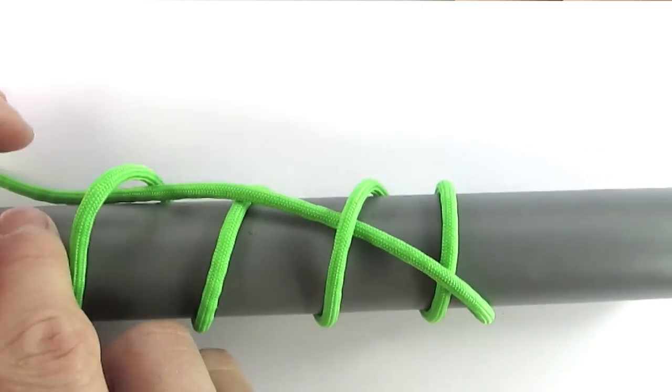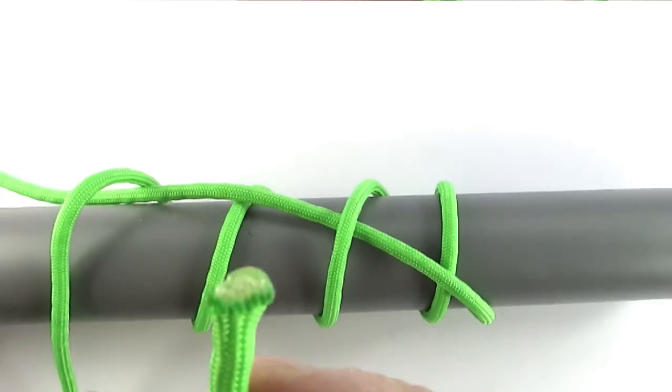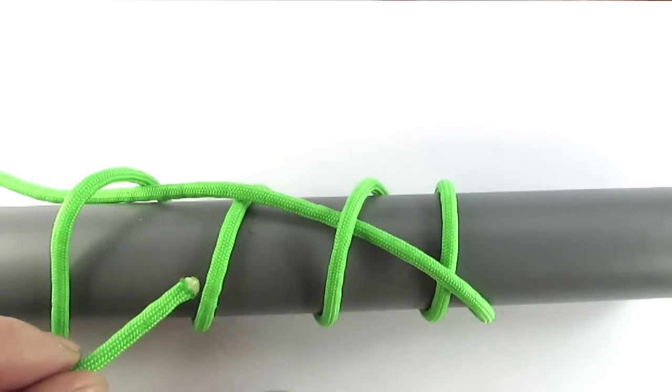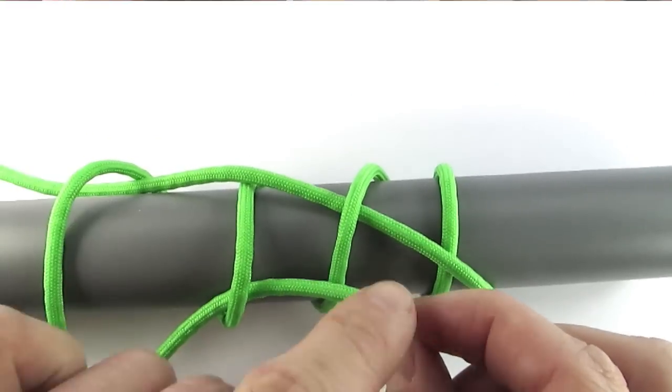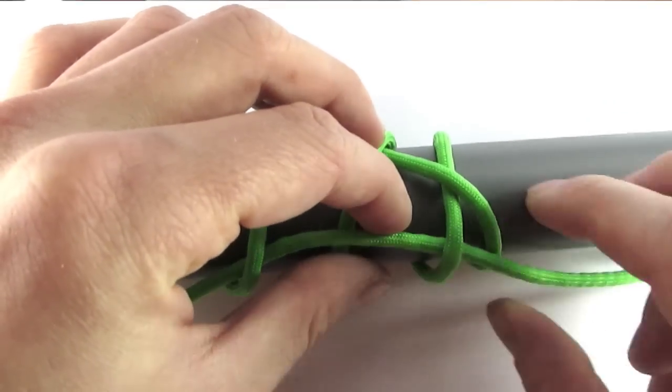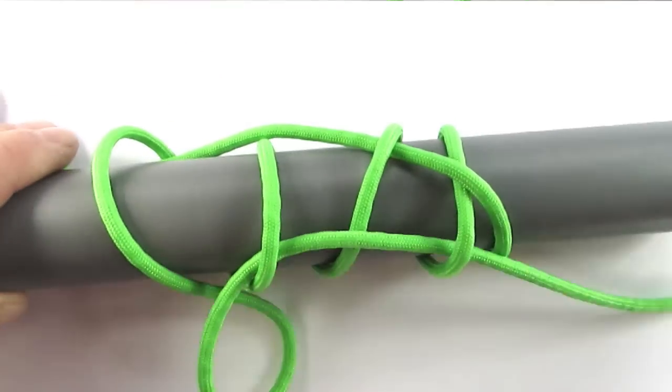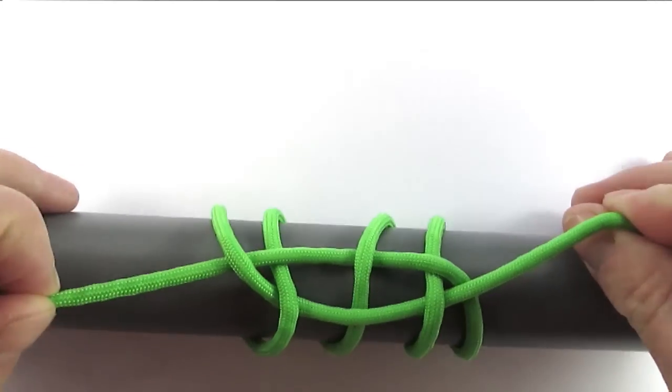Take your right cord and go under, over, under the cords until you reach the right hand. Like this. At this point you have the basic starting position which we're going to use to weave this knot.